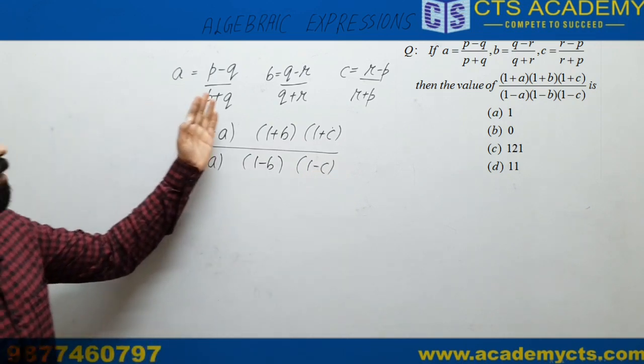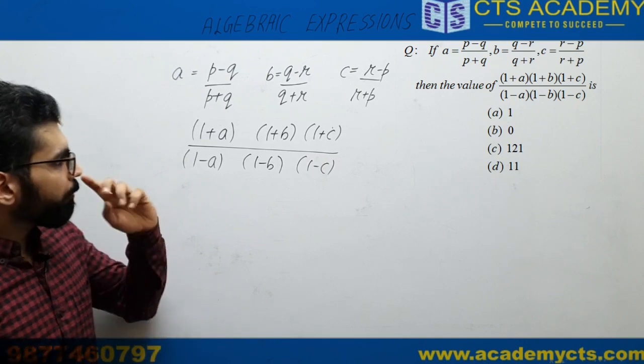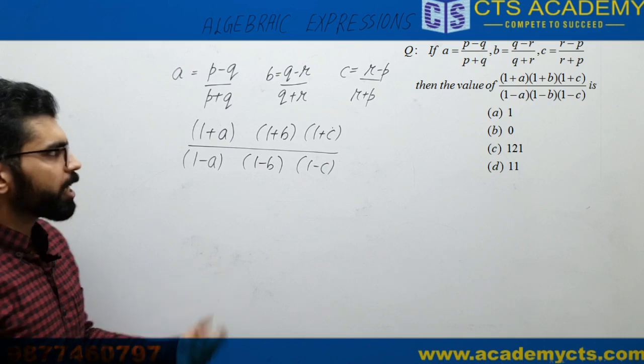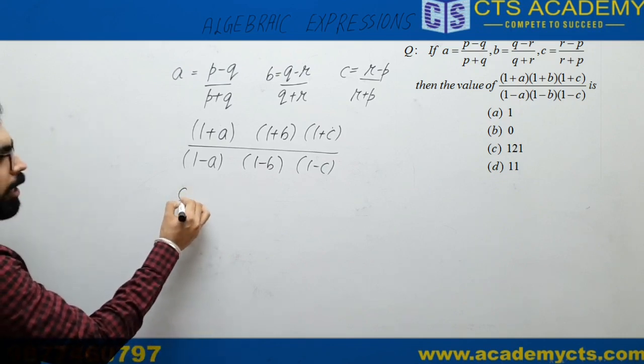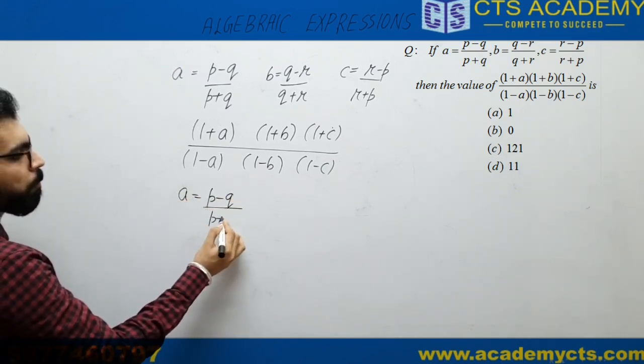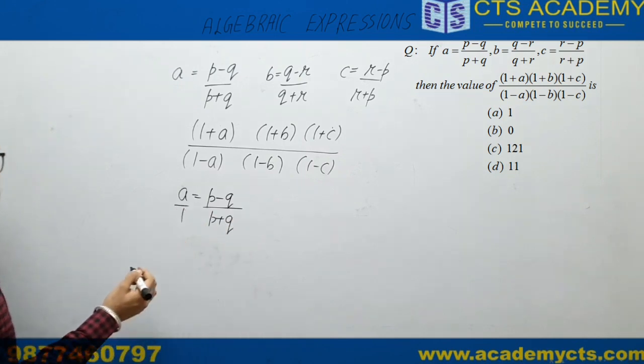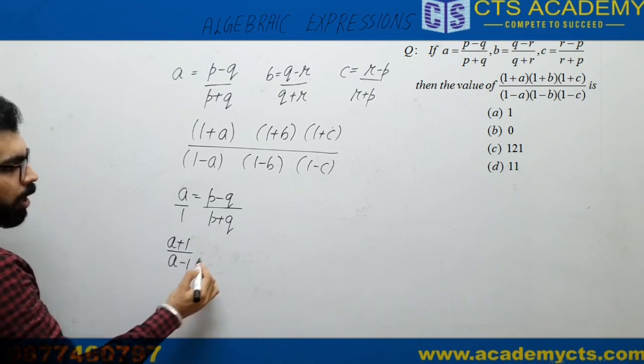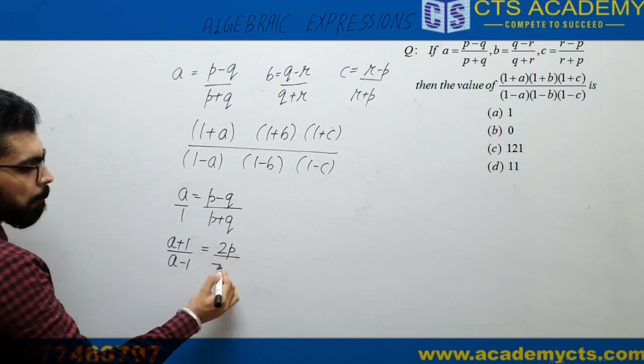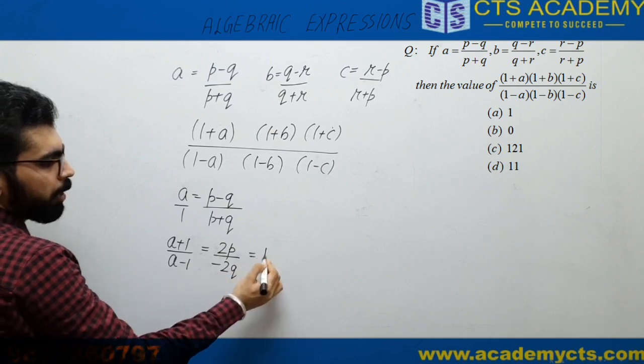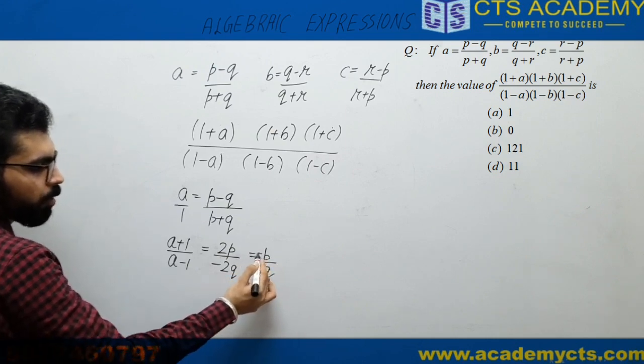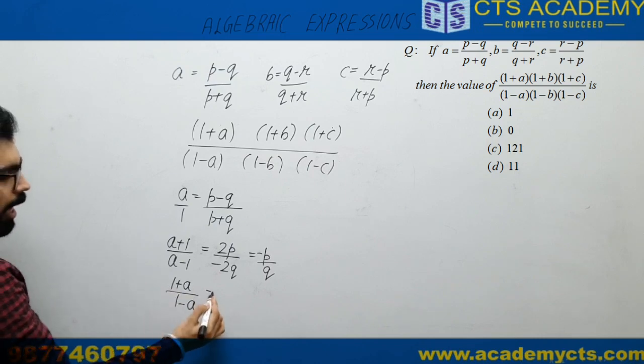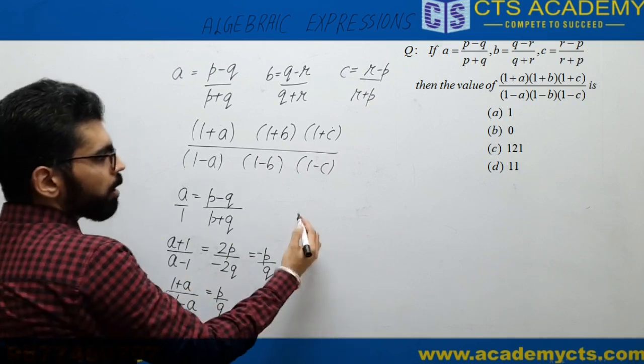It's better if A is written as (P - Q)/(P + Q), we can write A/1. If you use componendo and dividendo, we can get (A + 1)/(A - 1) = 2P/(-2Q), which means -P/Q. So here we can get (1 + A)/(1 - A) = -P/Q.